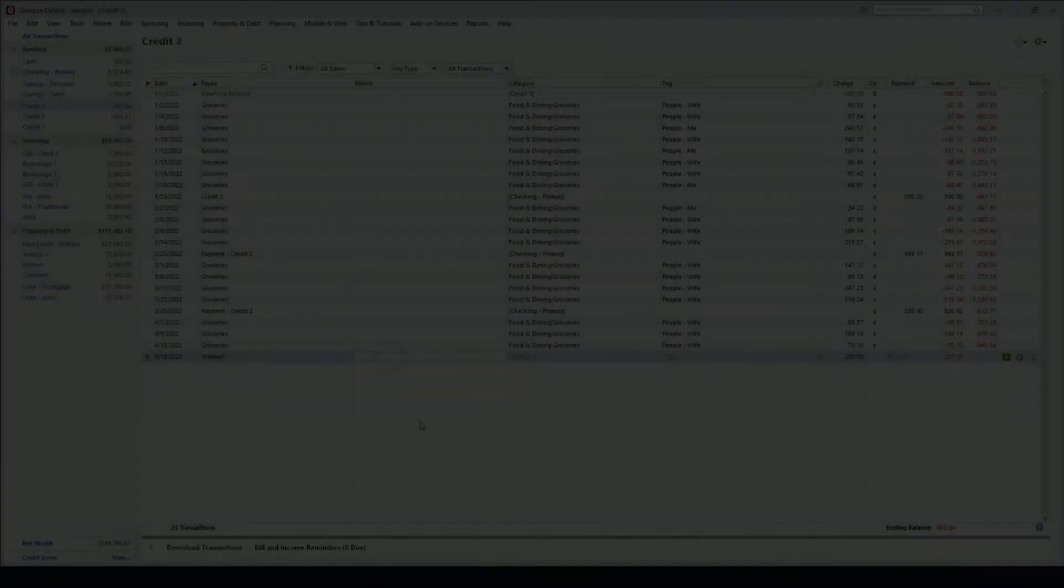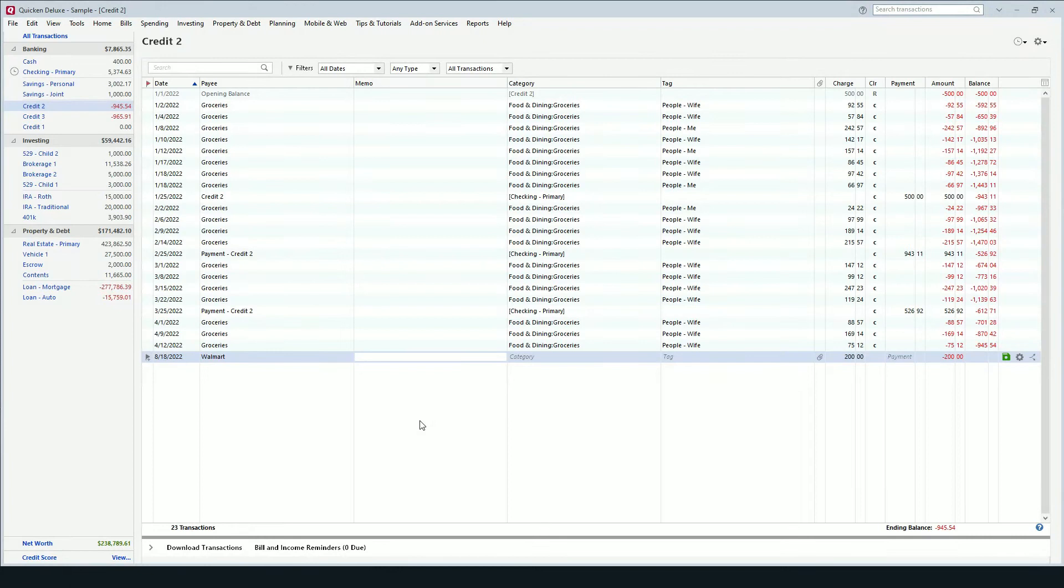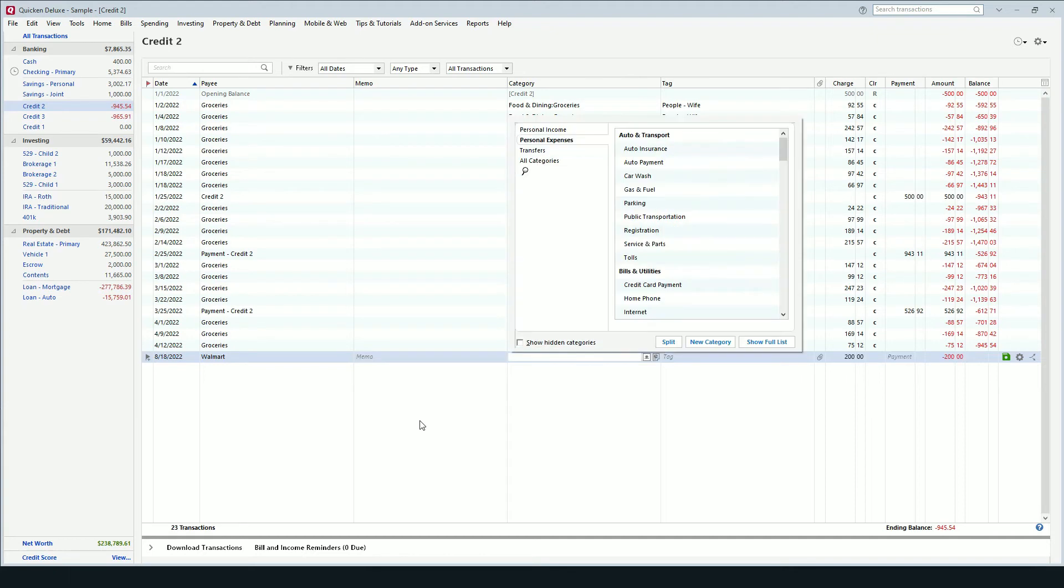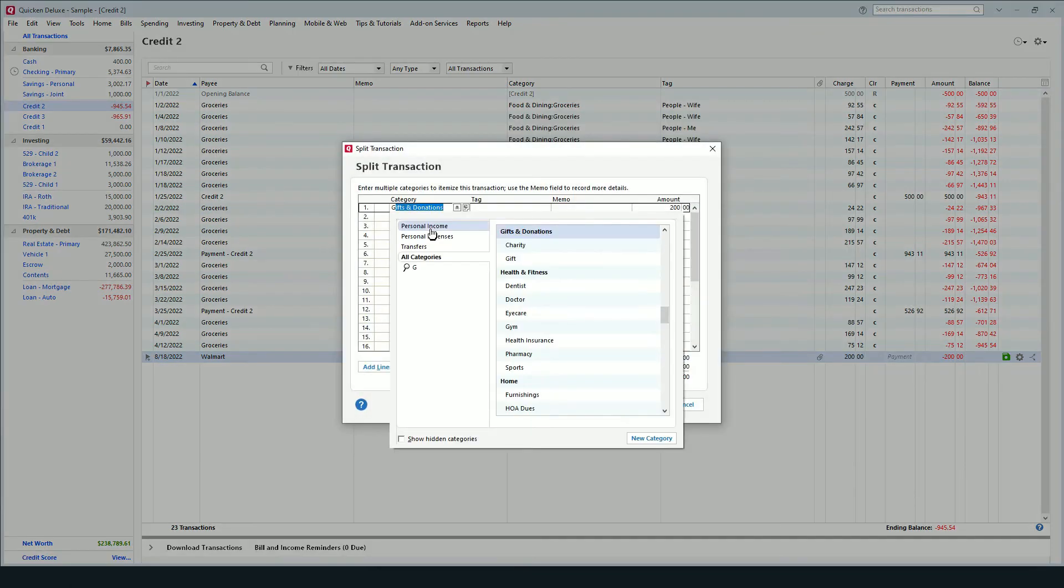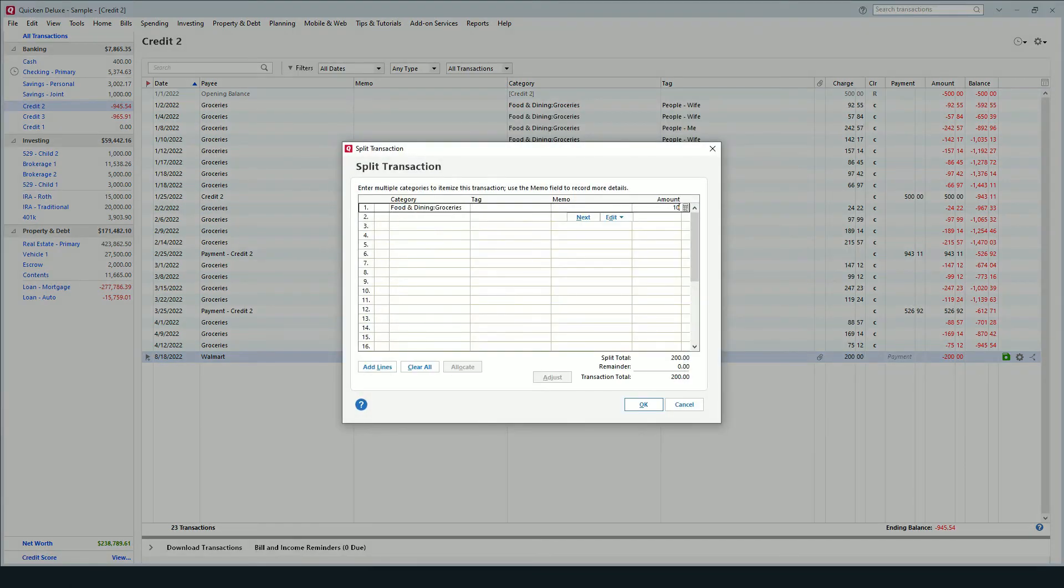So let's see how we go and enter this into Quicken. Unfortunately, this is a manual process. If you simply download a transaction into your register, you will need to go back and enter the split data or manually enter it from the start like we're going to do here. To do so, instead of selecting the category, click the split button and this will display the split transaction window.